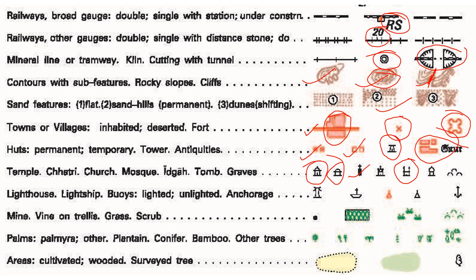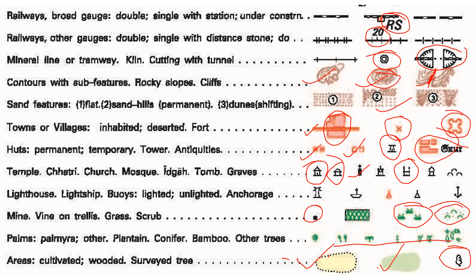Lighthouse — this symbol you'll mostly not find in a topo sheet because it is mostly in a desert area. Then we are coming to mines. Vine grass and shrub are very common because these are dry areas. You can also find palm, bamboo, and other trees. If the area is yellow, people are engaged in cultivation; if it is green, people are engaged in forestry. A black color tree is a survey tree — it is a kind of spot height showing the height of that particular place.